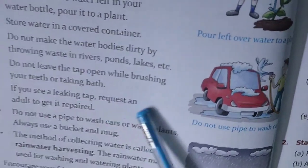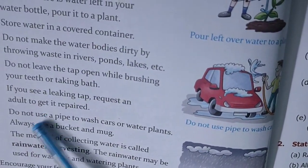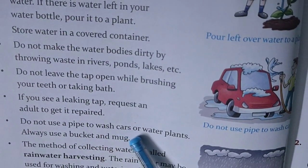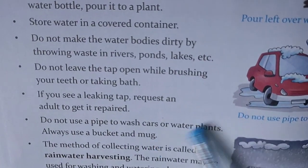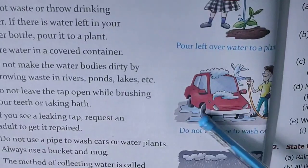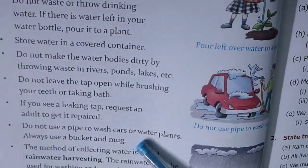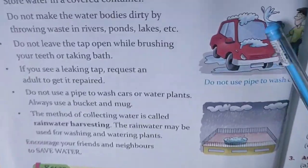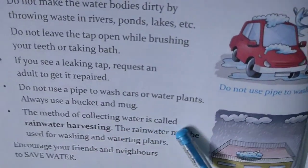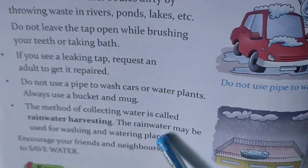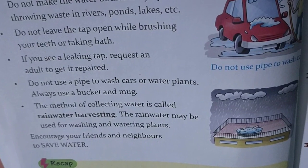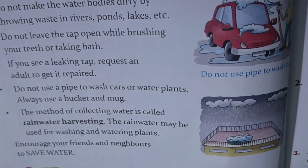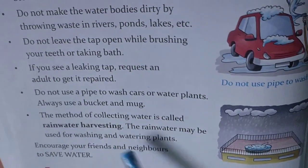If you see a leaking tap, request an adult to get it repaired. Do not use a pipe to wash cars or water plants — always use a bucket and mug, as continuous flowing water is wastage. The method of collecting rainwater is called rainwater harvesting. The collected rainwater may be used for washing and watering plants.